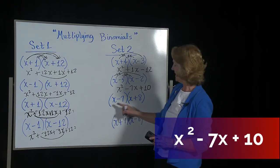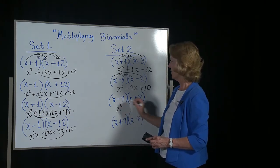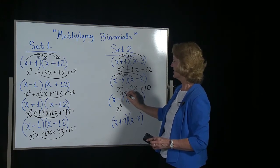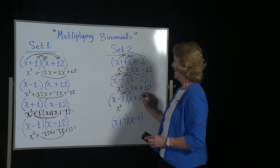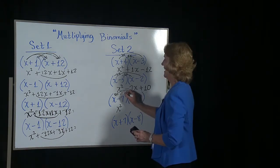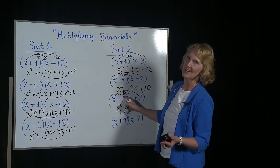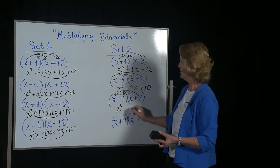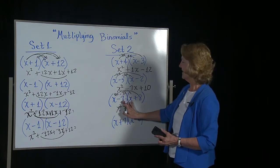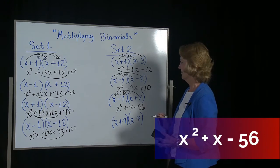Next one, x minus 7 times x plus 8. x times x gets you x squared. Negative 7 times x gets negative 7x. 8 times x becomes a positive 8x. 8x and a negative 7x would be like if you had 8 dollars and you spent 7, you still have 1x. Negative 7 times a positive 8 gets you negative 56. Done.